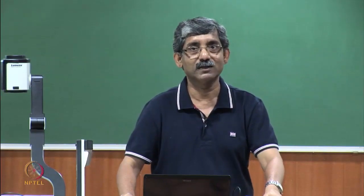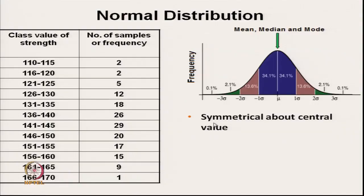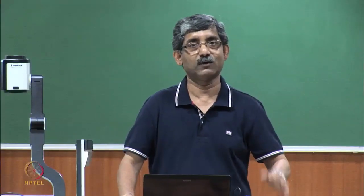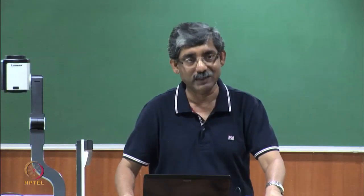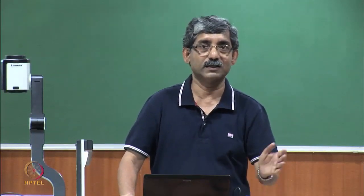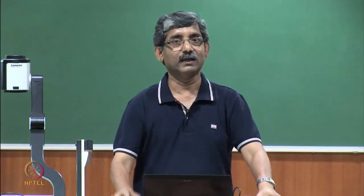In most cases, since textile materials are random in nature, the distributions are normal distributions. What is normal distribution? This normal distribution is symmetrical about the central value — both sides are symmetrical. There are cases of asymmetrical distribution, like the length-biased sampling where it is skewed towards the higher side. But in our discussion we will assume that most of the distributions are normal distributions.